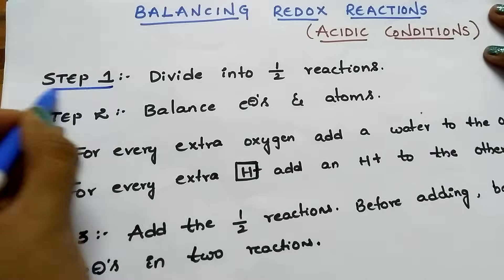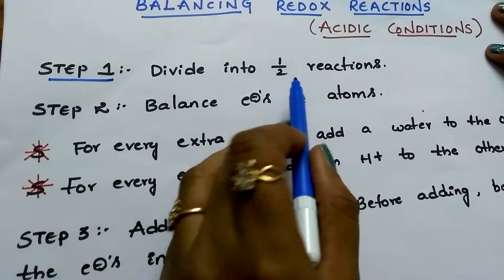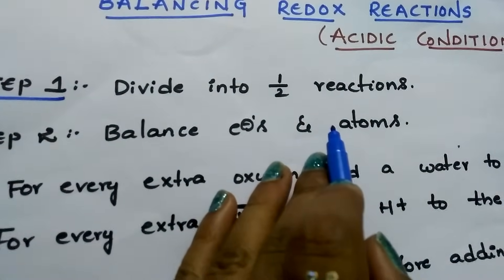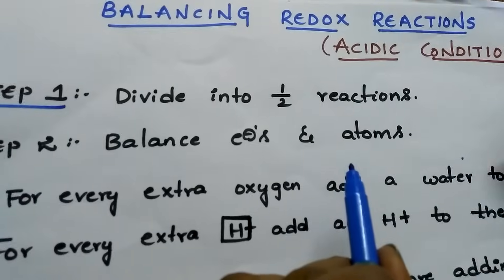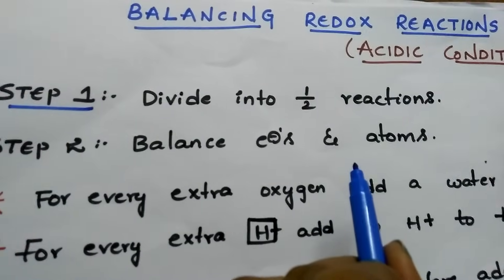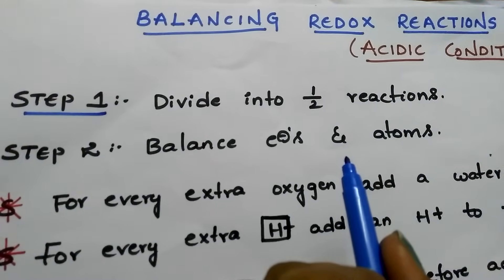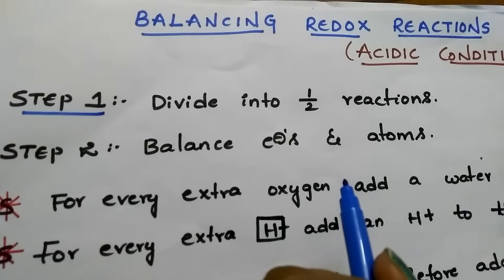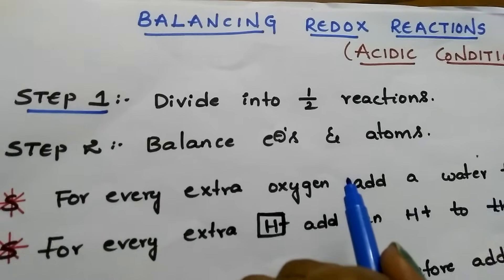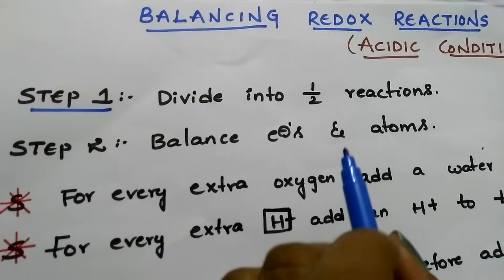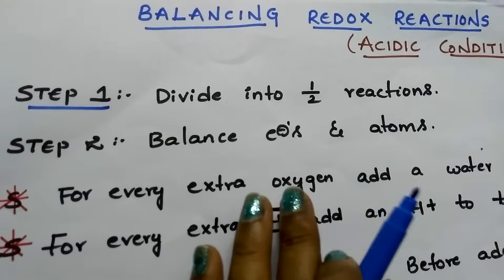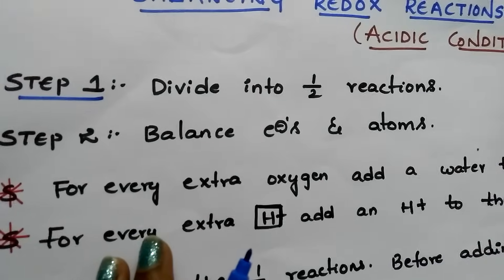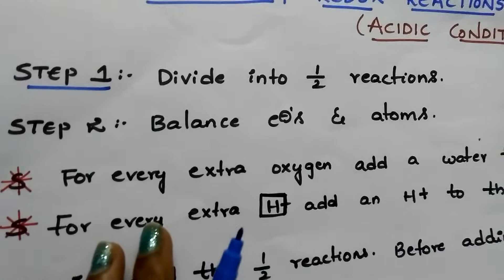Step number 1: Divide the reaction into two half reactions, based on the oxidation state. If a compound is undergoing oxidation, then another one is undergoing reduction. Divide the two reactions based on which one is undergoing oxidation and which one is undergoing reduction.